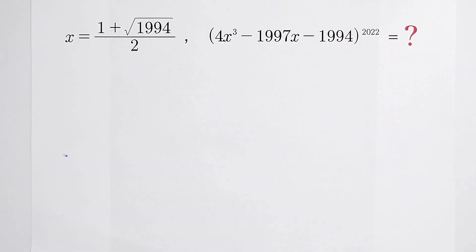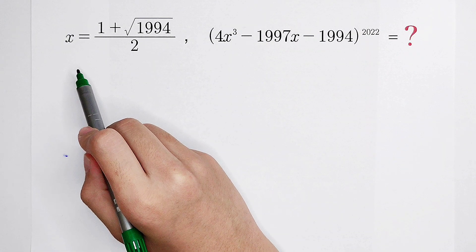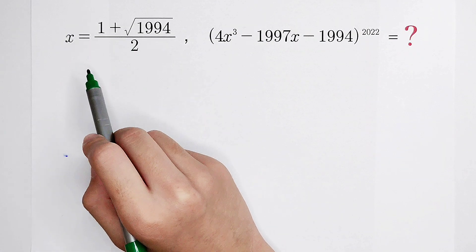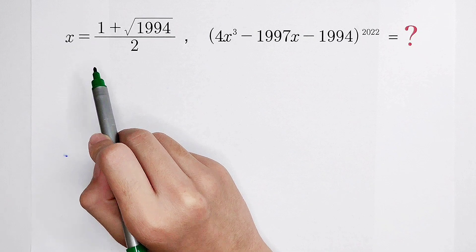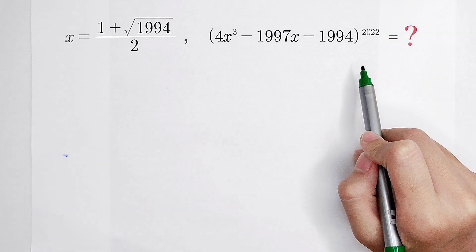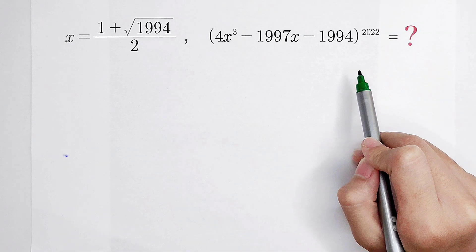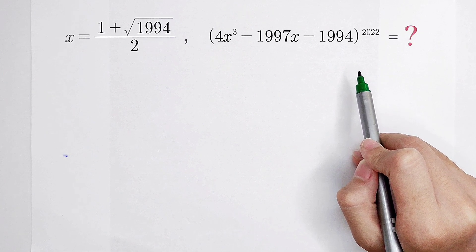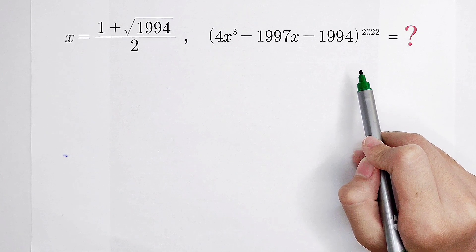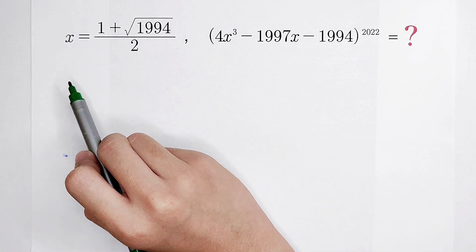A really, really nice question! x is equal to this, and solve the value of this. Oh, how can I do that? It's horrible. Three times horrible. First, the value of x is horrible.